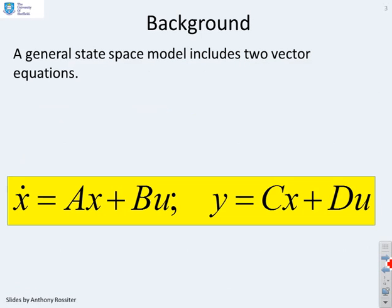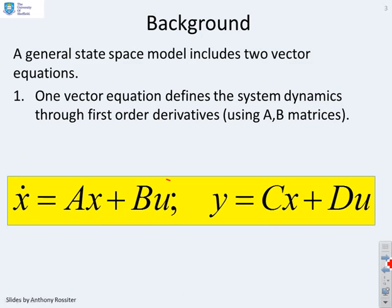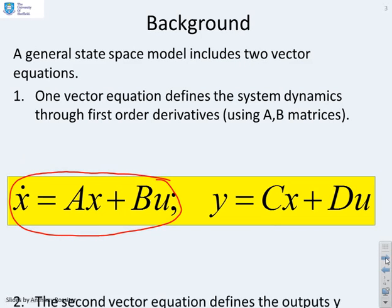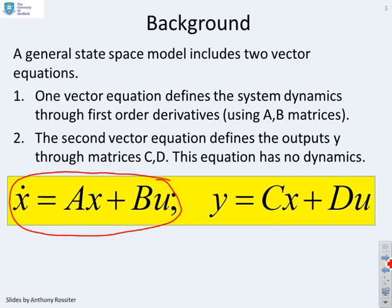A reminder then of what we've covered so far. A general state-space model includes two vector equations. The first vector equation includes the dynamics x dot equals Ax plus Bu and is defined through the matrices A and B. The second vector equation defines the output and is defined through the matrices C and D.